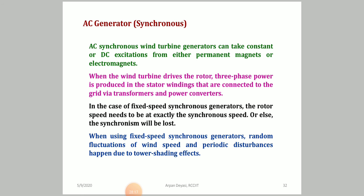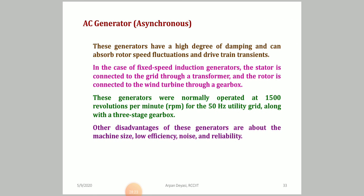For AC asynchronous generators, random wind speed fluctuations can be absorbed because the generator provides a high degree of damping and can absorb rotor speed fluctuations and drive-train transients. The stator is connected to the transformer and the rotor is connected to the wind turbine through a gearbox. Typically, 1500 RPM is produced in a three-stage gearbox for a 50 Hz utility grid. The main disadvantage is larger machine size, lower efficiency, noise, and reliability concerns.